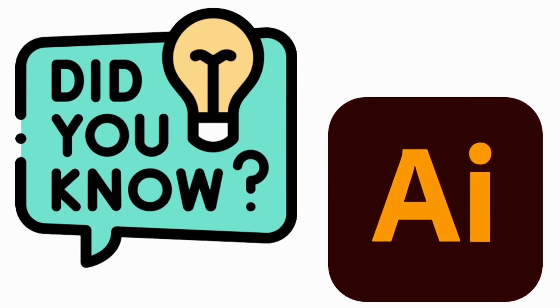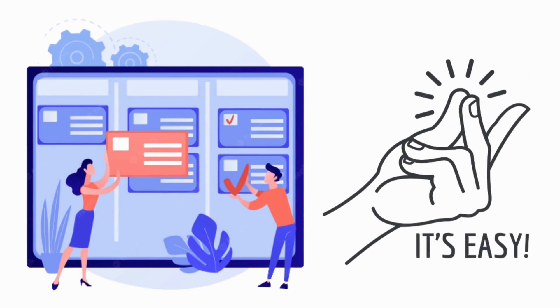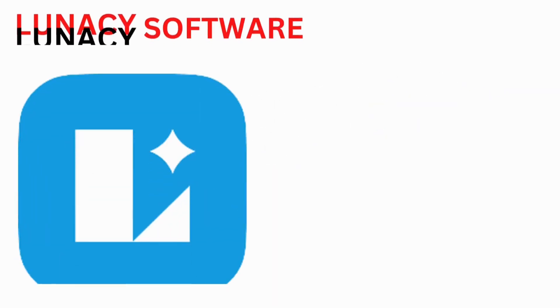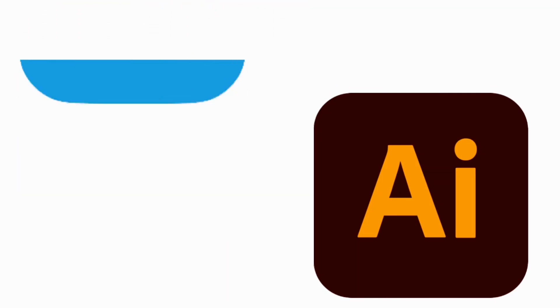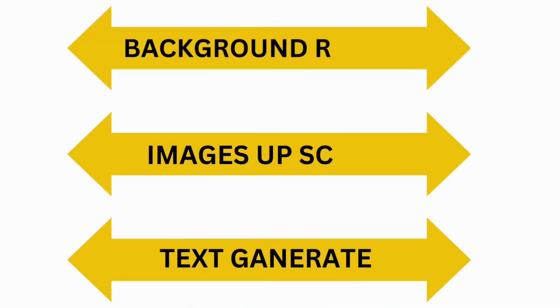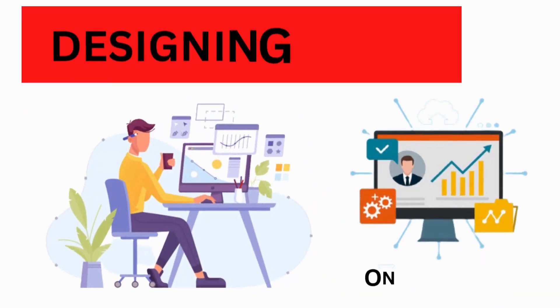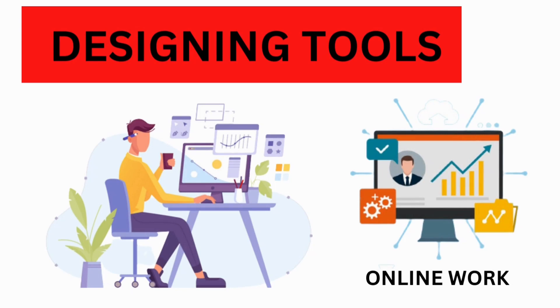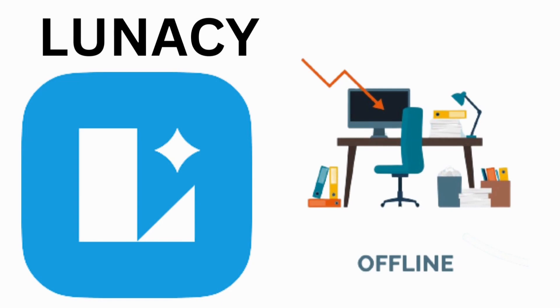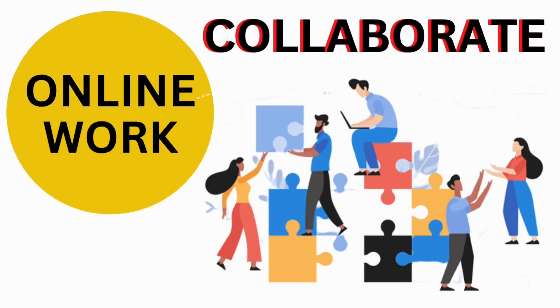AI can easily complete heavy tasks today, and in Lunacy you can use AI-powered tools which allow routine tasks to be done in just one minute. Features include background removal, image upscaling, avatar generation, and text-to-image generation. You may have heard of Figma, which requires working online, but in Lunacy you can do offline work and also collaborate with fellow designers online.